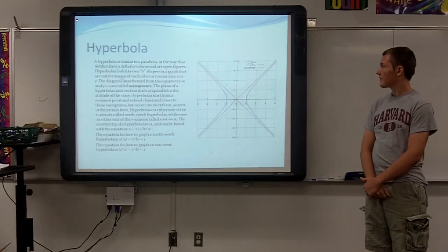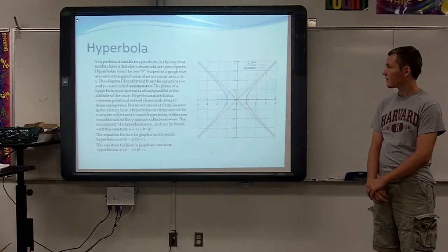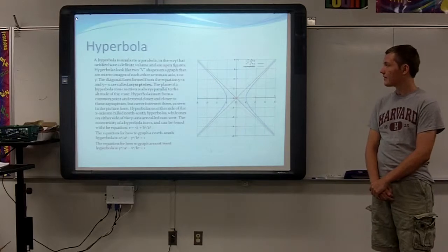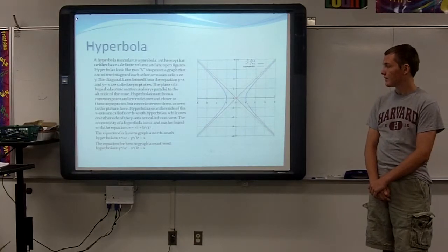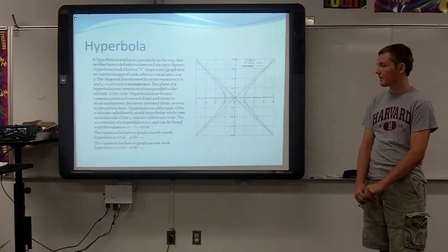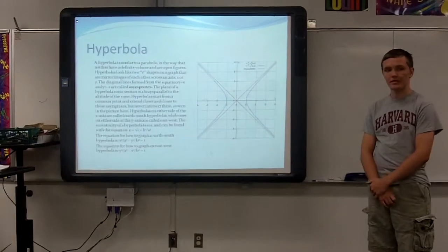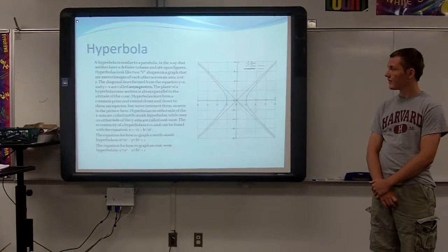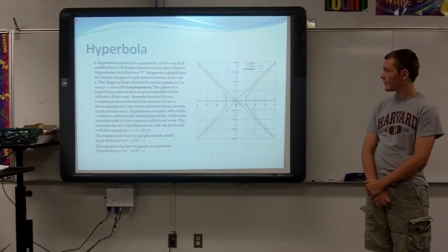Hyperbola. A hyperbola is similar to a parabola in the way that neither have a definite volume and are open figures. Hyperbolas look like two V shapes on a graph that are mirror images of each other across an axis, x or y. The diagonal lines are called asymptotes, which are the red lines here in this diagram.